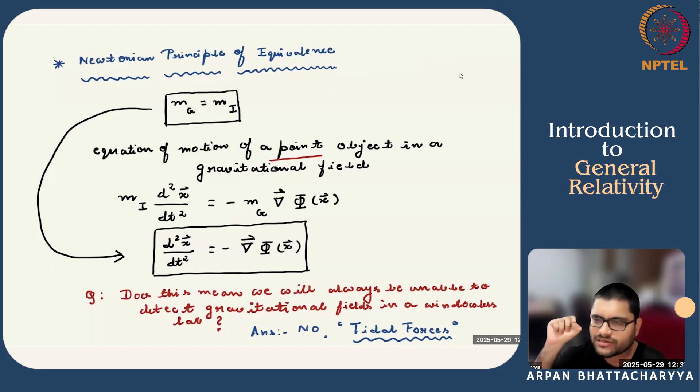Remember, the point object – the assumption about this point object is very important because you are canceling this m_i, m_g. If this is an extended object, it will be under an integral and you cannot make this cancellation. Of course, in the extended object, the gravitational force will vary from point to point. So this assumption about the point object is very important, which also means that whatever you are doing, the experiment or in your frame of reference, the gravitational force should remain uniform. And that is why this cancellation will happen.